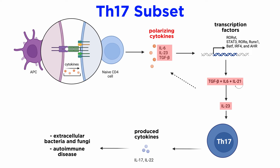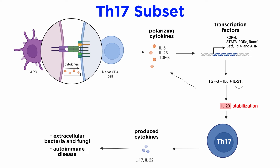IL-6, IL-21, IL-23, and TGF-beta are the major signaling cytokines involved in Th17 cell differentiation. Retinoic acid receptor-related orphan receptor gamma-T, or ROR-gamma-T, is the master regulator responsible for directing Th17 differentiation. The differentiation process can be classified into three stages: the initiation stage by TGF-beta and IL-6, the self-amplification stage by IL-21, and the stabilization stage by IL-23. STAT-3, ROR-alpha, RUNX1, BATF, IRF-4, and AHR are other transcription factors responsible for promoting Th17 differentiation.